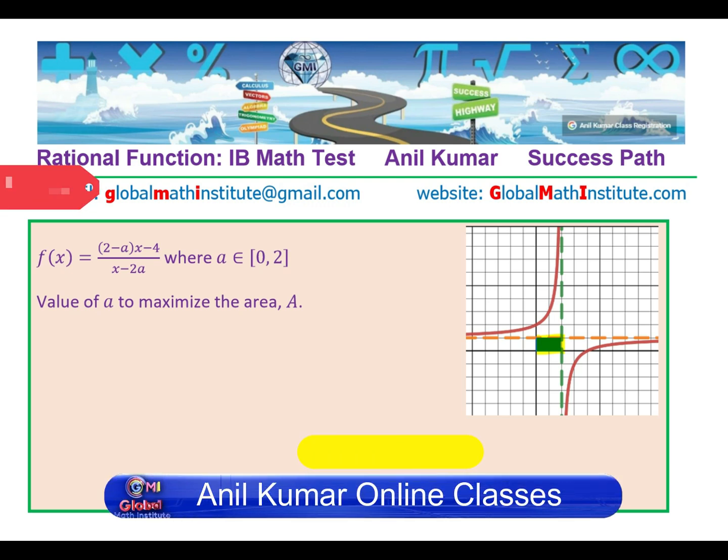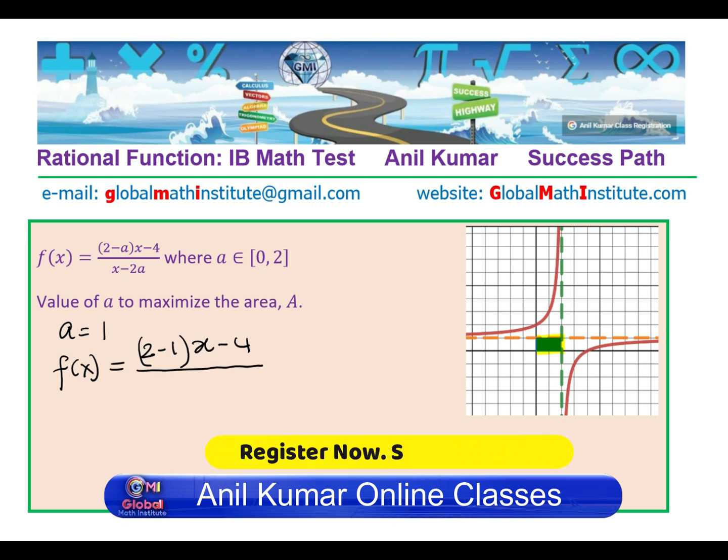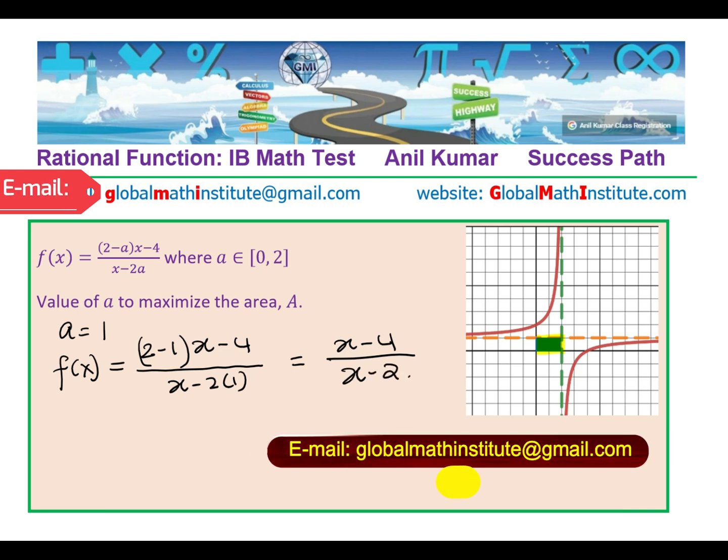Now, let's rewrite the function. Let's say a is now equals to 1, then what is the function equals to? So let's substitute a as 1: (2-1)(x-4)/(x-2×1), which gives you (x-4)/(x-2). So basically, for maximum area of this rectangle shaded between the coordinate axis and the asymptotes, a value is 1, and the function is (x-4)/(x-2). Perfect. So is that clear to you? Absolutely.